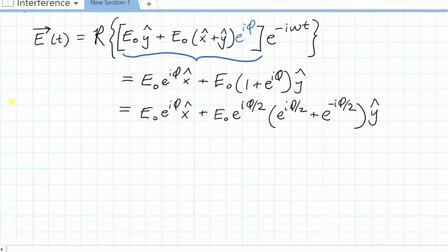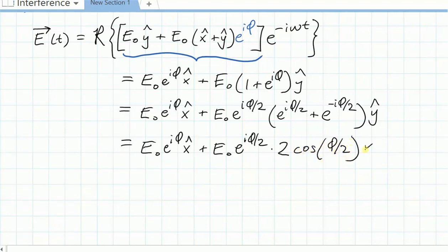Okay, there's one more line of this to go. No reason to change the first term. But the second term, e to the i phi over 2 remains. And then this combination of e to the i phi over 2s, you should recognize that as being equal to twice the cosine of phi over 2.